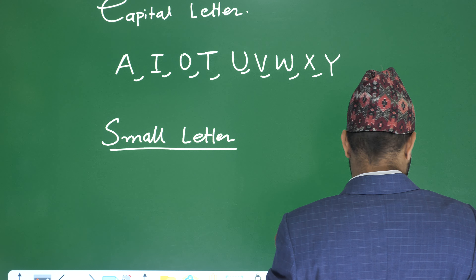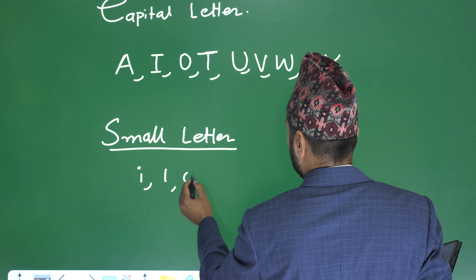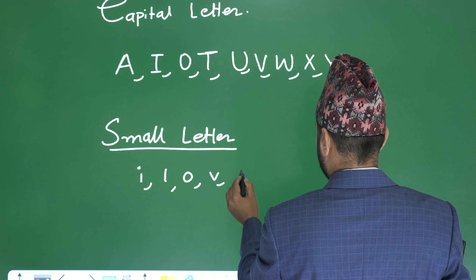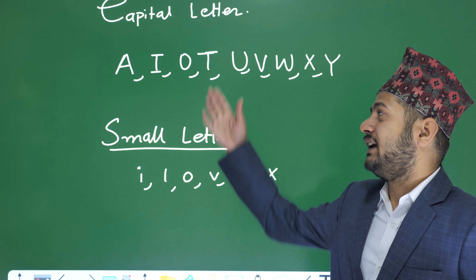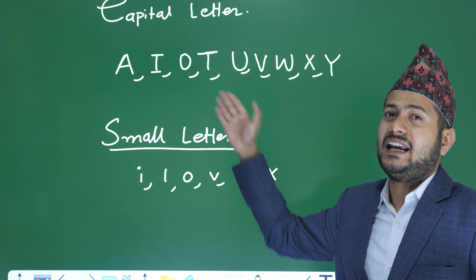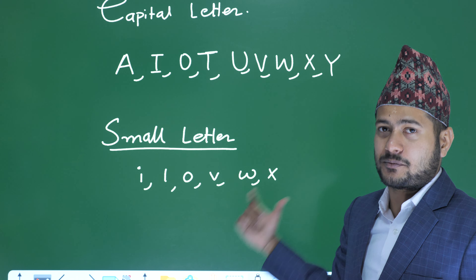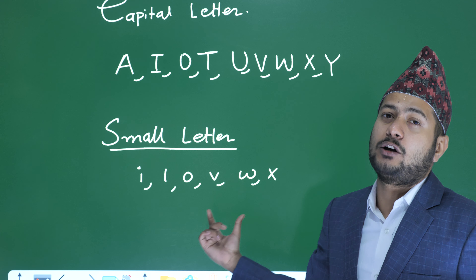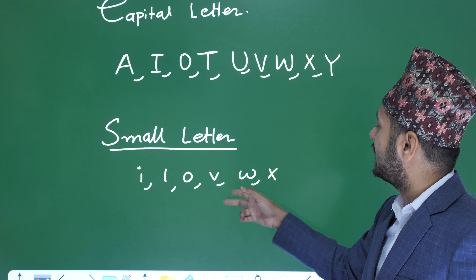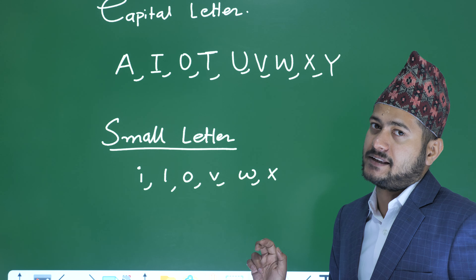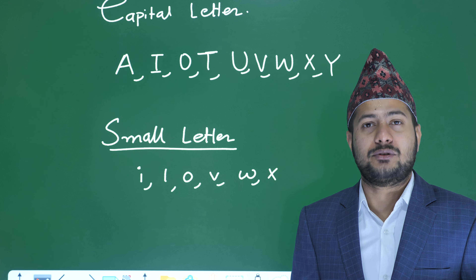Now, what about small letters? Small letters i, l, o, u, w, x — remember that: i, o, u, w, x. You can remember it as 'I love WX' — i, u, w, x. So we can see some changes in other small letters, but these ones remain the same in their mirror image.